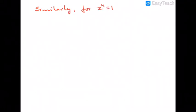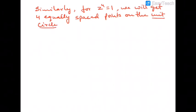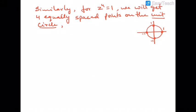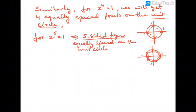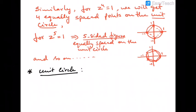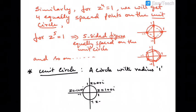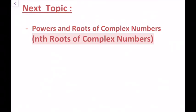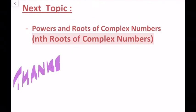Similarly, for z^4 = 1 we get 4 equally spaced points on a unit circle, and for z^5 = 1 we get a 5-sided figure equally spaced on a unit circle. Our next and final topic of complex numbers is nth roots of complex numbers.